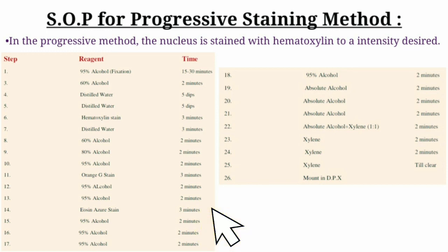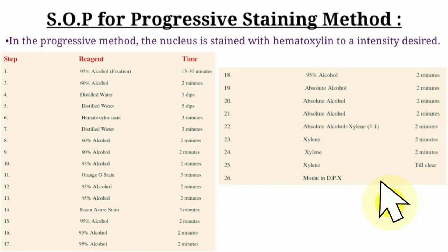Progressive method steps: Step 1 — fixation with 95% alcohol for 15–30 minutes. Then 60% alcohol 2 min, distilled water 5 min (×2), hematoxylin stain 3 min, distilled water 3 min, 60% alcohol 2 min, 80% alcohol, 95% alcohol 2 min, Orange G stain 3 min, 95% alcohol 2 min, Eosin Azure stain 3 min, 95% alcohol 4 times (2 min each), absolute alcohol 2 min (×3), absolute alcohol-xylene 1:1 2 min, then xylene 3 times (2 min each), holding in final xylene until slide is clear.